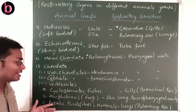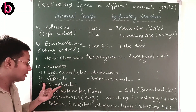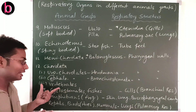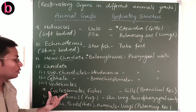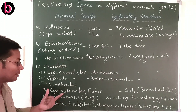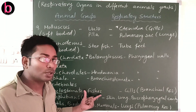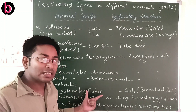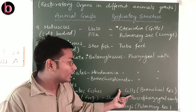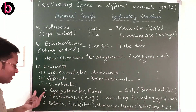Vertebrates are the most developed animals, possessing a vertebral column — also known as backbone — into which the notochord is converted. The first category is Cyclostomes, which have a circular mouth; examples are hagfish. Fishes are of two types: cartilaginous (non-bony) and bony. Cyclostomes and fishes all respire through gills, known as branchial respiration.